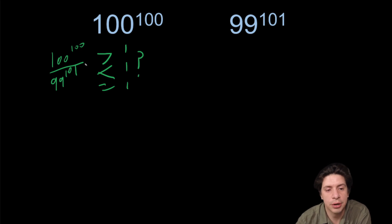It's hard because the bases and the powers are different, so it doesn't make for a clean comparison. But what if we wrote the bottom as 99 to 100 times 99 to the one?